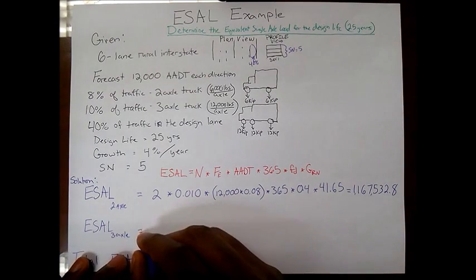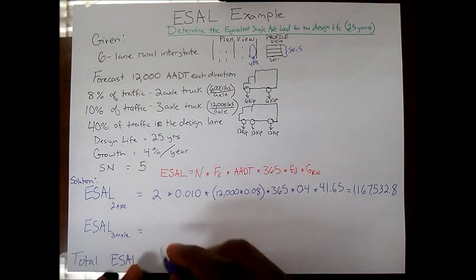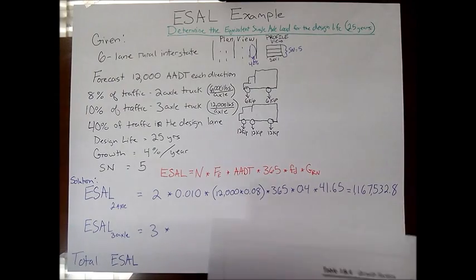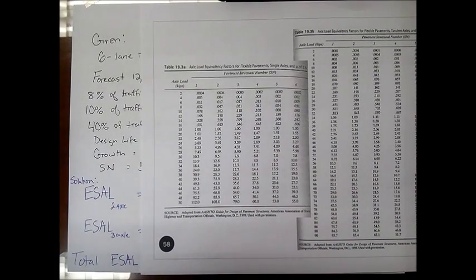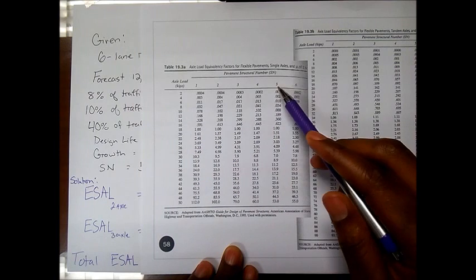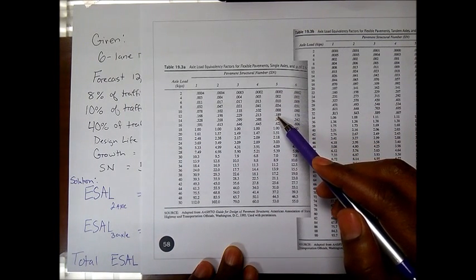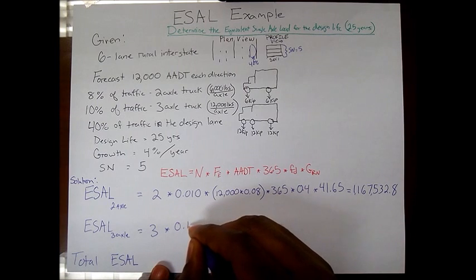Do the same thing here. For the three-axle type of vehicle, well there's three single axles here I can see, so I'm just going to go ahead and put 3. I need to multiply it by the amount of load that the road feels from that vehicle. In order to do that I need to come right back to my chart here, my table, and line up 12 kips with structural number 5 and it looks like I get 0.189.